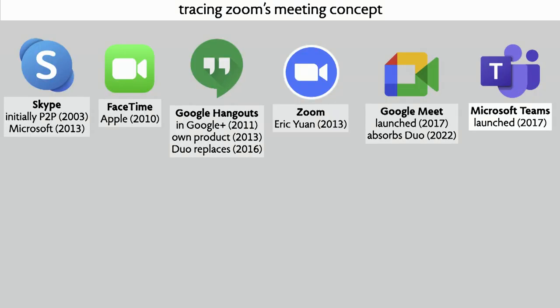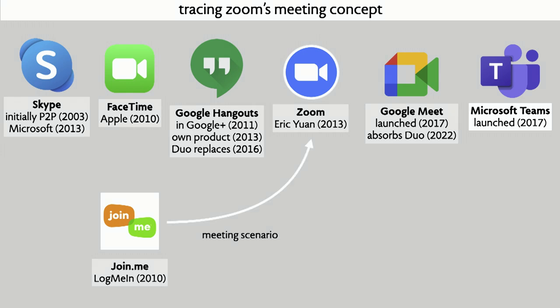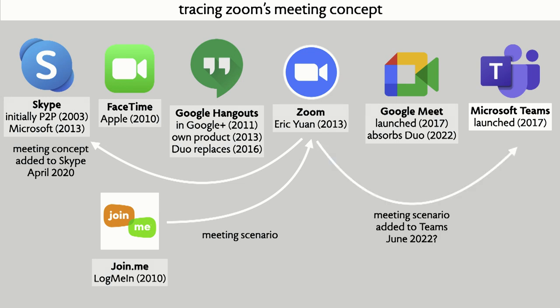Looking at the entire history of video conferencing, a company not typically mentioned is LogMeIn, which had a product called Join.me. They were trying to do an innovator's-dilemma-style compete with big players by producing really lightweight video conferencing, and they had this idea of a meeting link. That idea gets adopted by Zoom. Skype, realizing how badly they needed it, did it themselves in April 2020 — but they'd already lost momentum, and because it wasn't the central way of making a Skype call, people barely even noticed. Microsoft Teams, a couple of years later, also realized it needed this scenario.